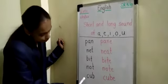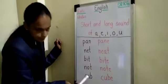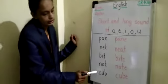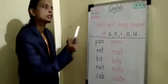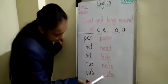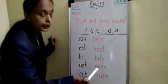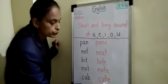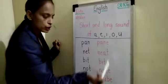Next word. C, U, B, CUB. CUB is a short sound of U. Okay. C, U, B, E, CUBE. CUBE is a long sound of U.